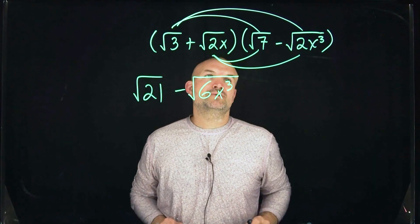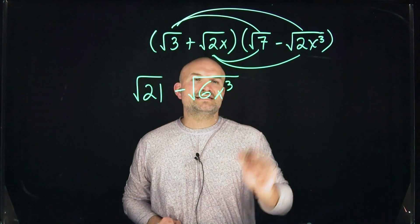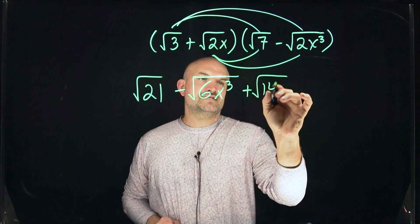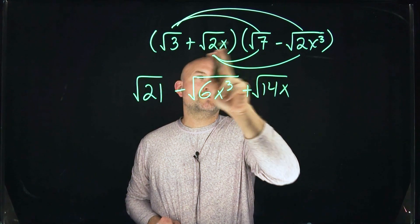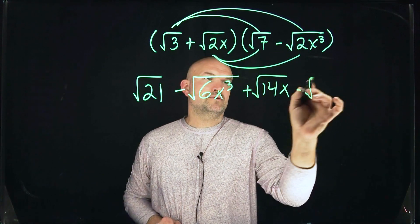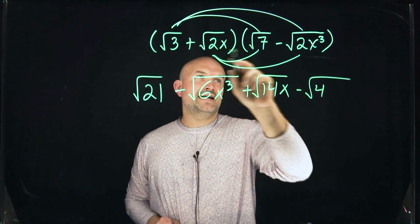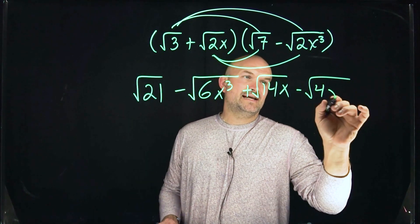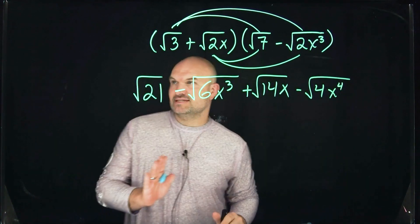Then we go over here, square root of two x times seven, that's going to be a positive square root of 14x. And then over here, we're going to have square root times negative. So that's going to be negative square root. And 2 times 2 is going to be a 4. And x times x cubed is going to be x to the fourth.